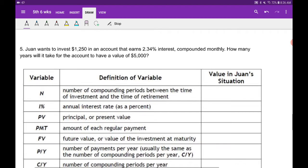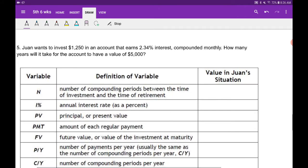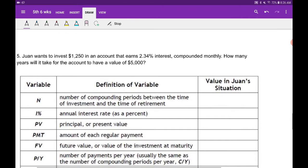So we're going to take these parts and put them in our calculator. Let's organize it. Juan wants to invest $1,250 and we're going to put that into his principal value.